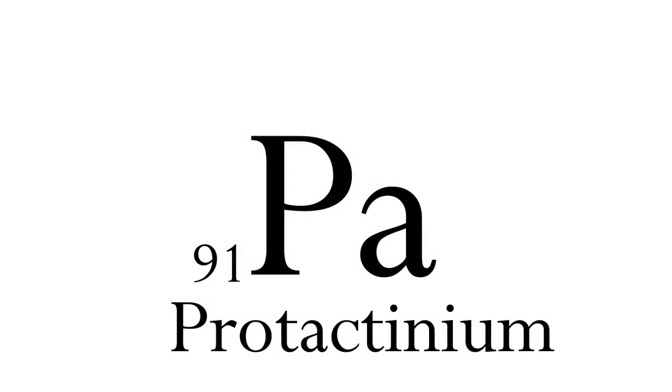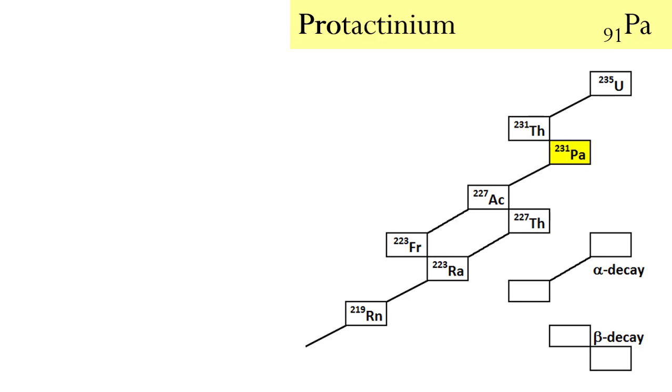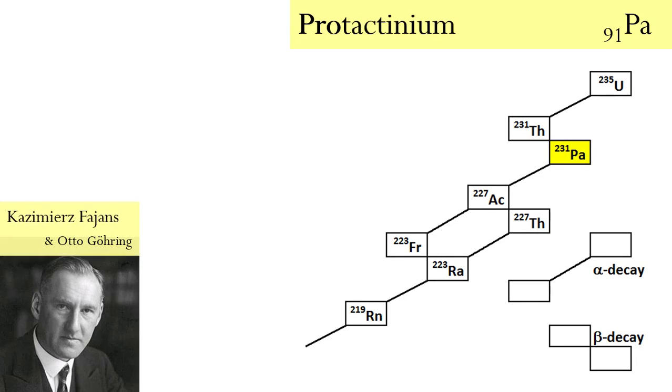Ninety-one is protactinium, originally named proto-actinium because it is the element that transmutes into Actinium when it undergoes alpha decay. Its existence was predicted by Mendeleev, and it was identified by Fajans and Göring, and its discovery is credited to Hahn and Meitner.